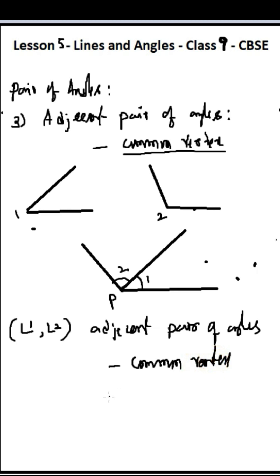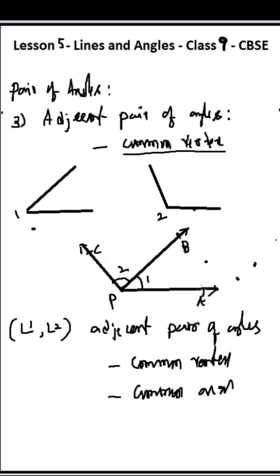Adjacent angles should have a common vertex and one common arm. Here, let us say P, A and P, B and P, C. So angle APB is one angle, and PB is the common arm. Angle BPC is one more angle. P is the common vertex. So this is what adjacent pair of angles means.